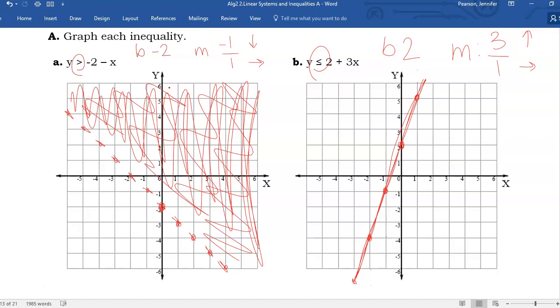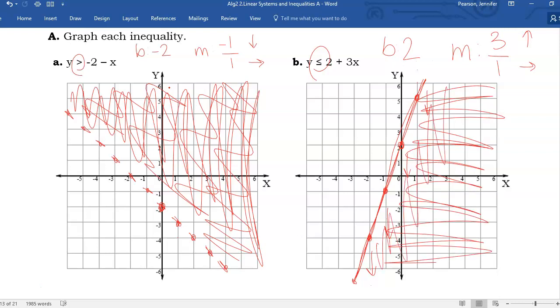Then we have a less than, so we're going to shade everything down from the line. And I want to be mindful that we're not looking at left and right. Because if you look at both of these examples, a and b, they both look like I shaded to the right. But one is up and one is down in terms of y. One is up from y and one is down from y. And that is my final answer.